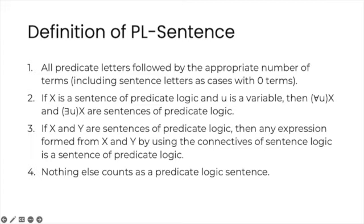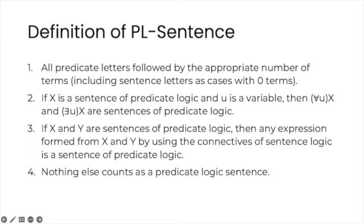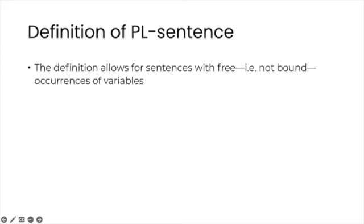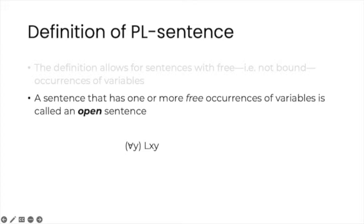Finally, the previous three clauses exhaust the list of things that qualify as sentences in this system. Nothing else counts as a predicate logic sentence. Any expression formed in accordance with the rules 1 through 4 above is called a well-formed formula, abbreviated as wff. The definition allows for sentences with free, that is not bound, occurrences of variables. A sentence that has one or more free occurrences of variables is called an open sentence. In contrast, those sentences that are not open are closed sentences. Here, all occurrences of variables are bound, so this is a closed sentence.